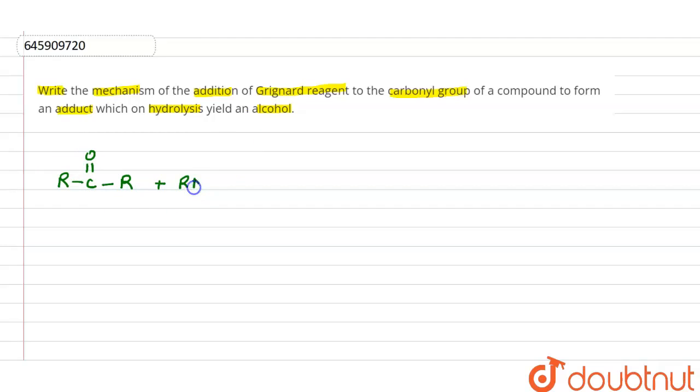Grignard reagent is basically RMgX. In between this alkyl group, carbon is present. In that carbon and magnesium, this carbon will have a negative charge and this will have a positive charge because the more electronegative atom, the carbon, is there and this is less electronegative. So this as a nucleophile will...